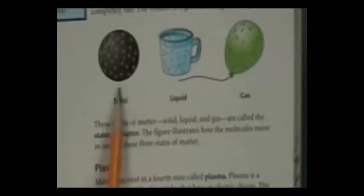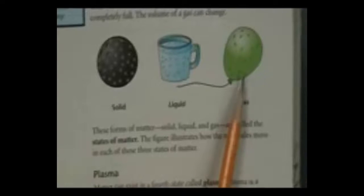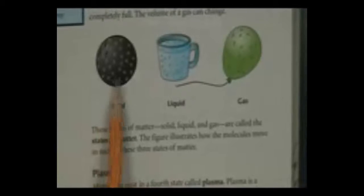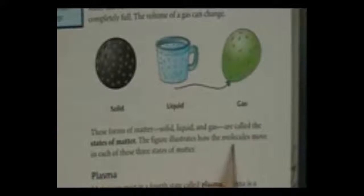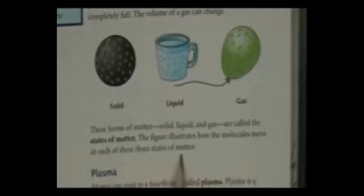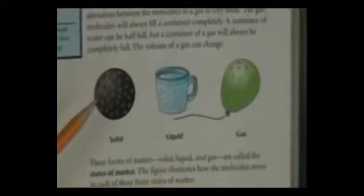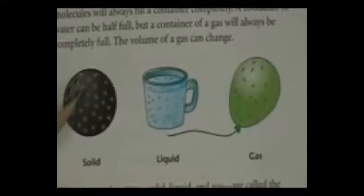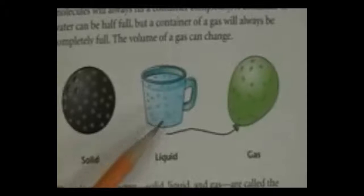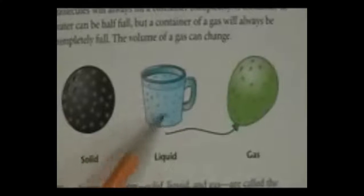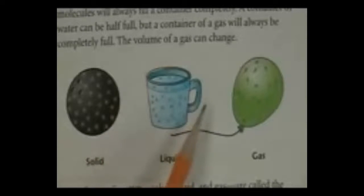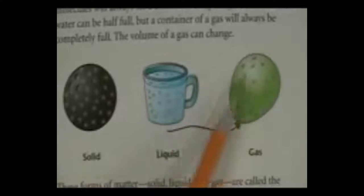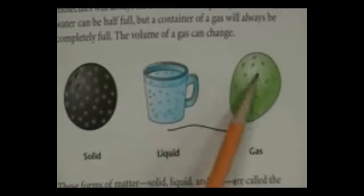These forms of matter, solid, liquid, gas, are called states of matter. Notice in this picture we have the three states of matter. The figure illustrates how the molecules move in each of these three states of matter. If you look closely at the picture, you can see that the molecules in the solid are close together and not moving very much at all. In the liquid, the molecules are farther apart and they're moving more than in the solid. They're sliding past each other. And in the gas, they're really moving around much more quickly and there's more space between the molecules.